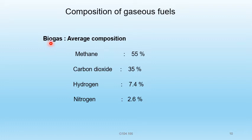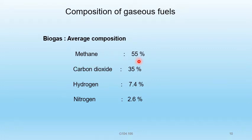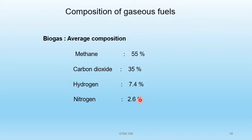Biogas is a mixture of methane, carbon dioxide, hydrogen, and nitrogen. Average composition: methane 55%, carbon dioxide 35%, hydrogen 7.4%, nitrogen 2.6%.